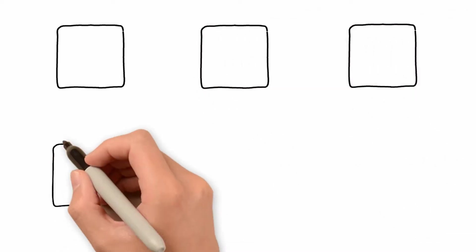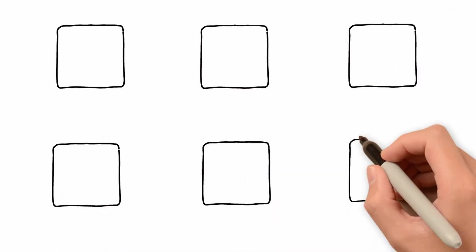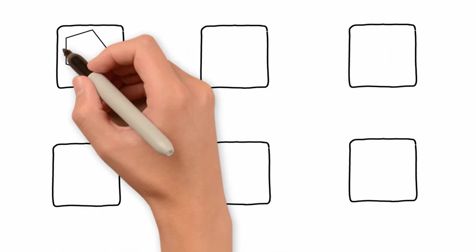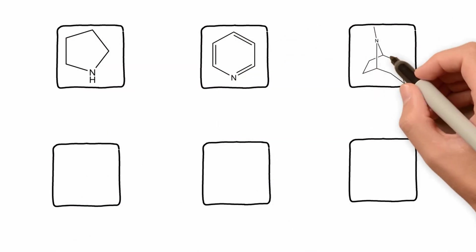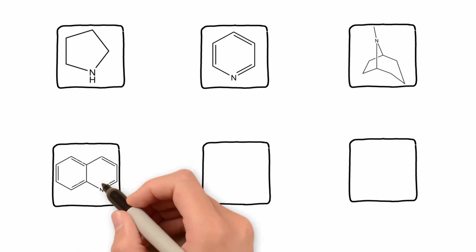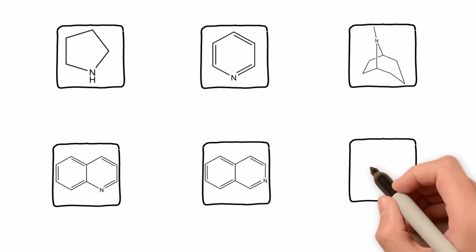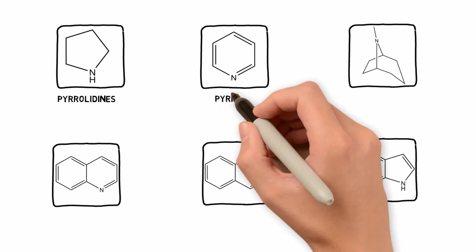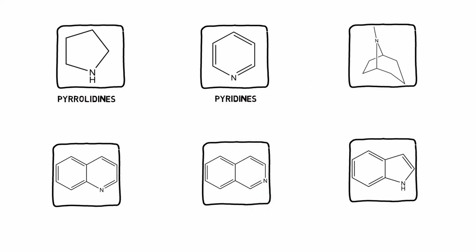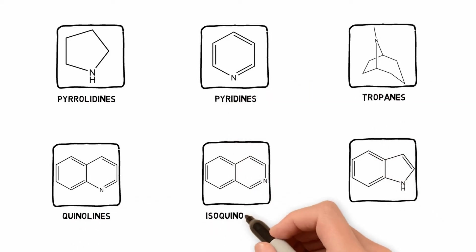Alkaloids are naturally occurring nitrogen-containing bases and have a wide variety of physiological effects on humans and other animals. There are many classes of alkaloids including pyrolidines, pyridines, tropanes, quinolines, isoquinolines, and indoles.